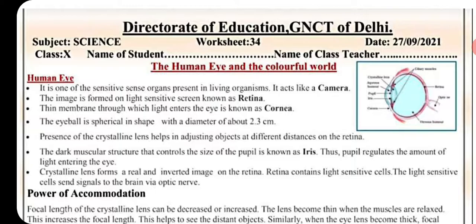The eye is a spherical shape with a diameter of about 2.3 centimeters. The presence of the crystalline lens helps in adjusting objects at different distances on the retina. The dark muscular structure that controls the size of the pupil is known as the iris. The pupil regulates the amount of light entering the eye.